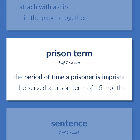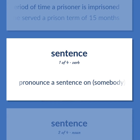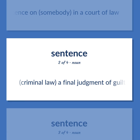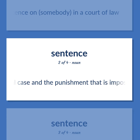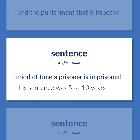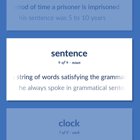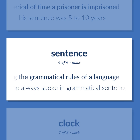SENTENCE: The period of time a prisoner is imprisoned — he served a prison term of 15 months. Pronounce a sentence on somebody in a court of law. Criminal law: a final judgment of guilty in a criminal case and the punishment that is imposed. His sentence was 5 to 10 years. A string of words satisfying the grammatical rules of a language — he always spoke in grammatical sentences.